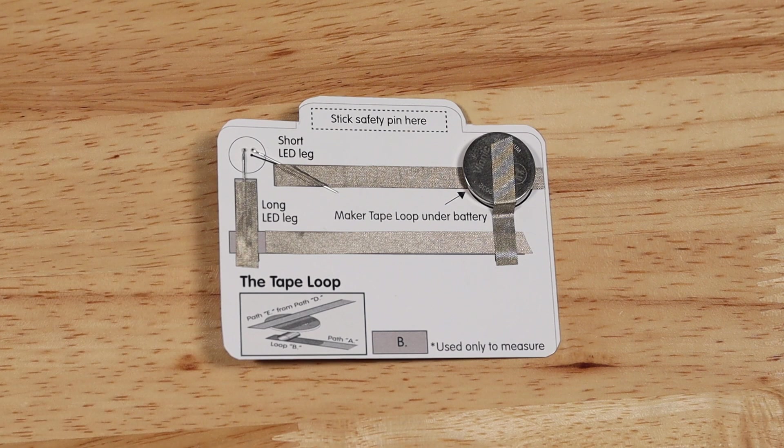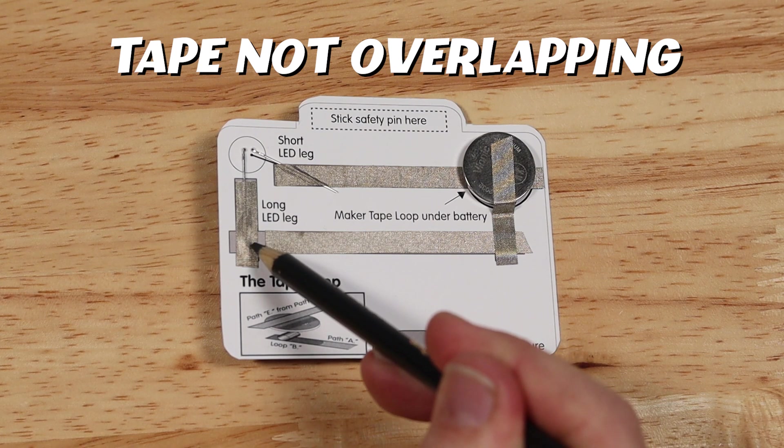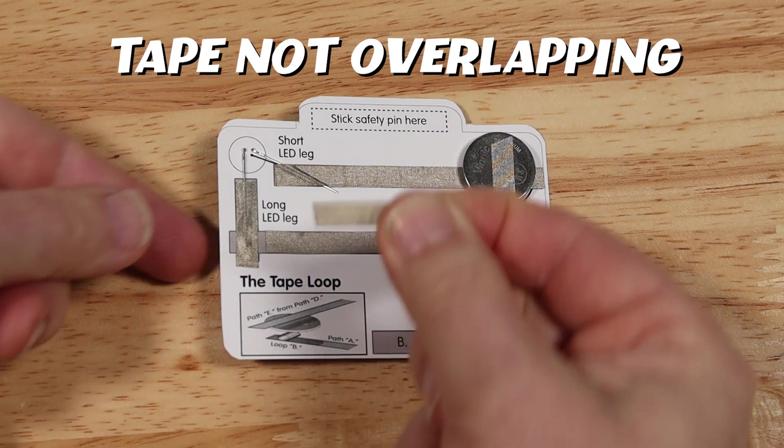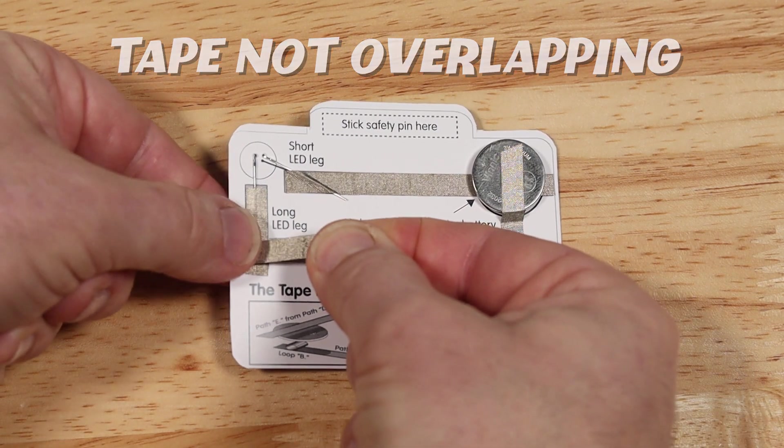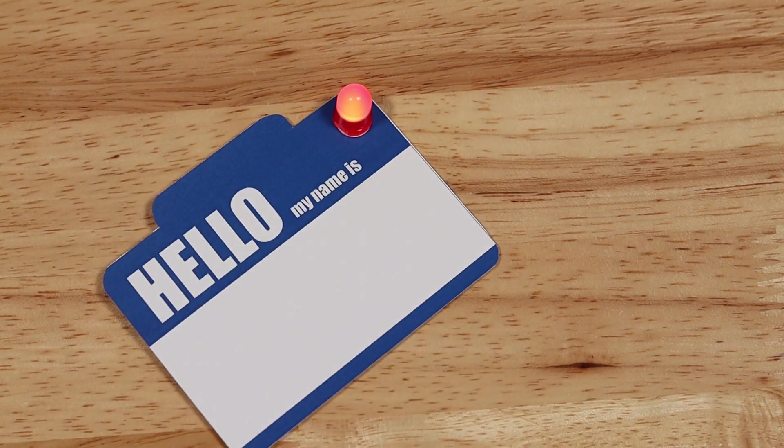Let's troubleshoot this one. If we take a look on the back here, we can see that two pieces of the maker tape are actually not touching each other. It's an open circuit. The easiest way to correct this is to cut another piece of maker tape and simply place it right over the top, completing the circuit. And the LED will light up.